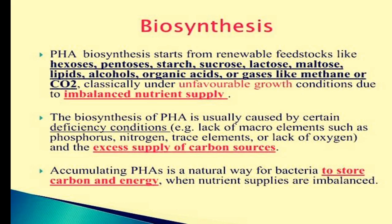Biosynthesis of Polyhydroxyalkanoates: PHA biosynthesis starts from renewable feedstocks like hexose, pentose, starch, sucrose, lactose, maltose, lipids, oligols, organic acids, or gases like methane or CO2 — classically under unfavorable growth conditions due to imbalanced nutrient supply. The biosynthesis of PHA is usually caused by certain deficiency conditions, e.g. lack of macro elements such as phosphorus, nitrogen, trace elements, or lack of oxygen, and excess supply of carbon sources. Simulating PHA is a natural way for bacteria to store carbon and energy when nutrient supplies are imbalanced.